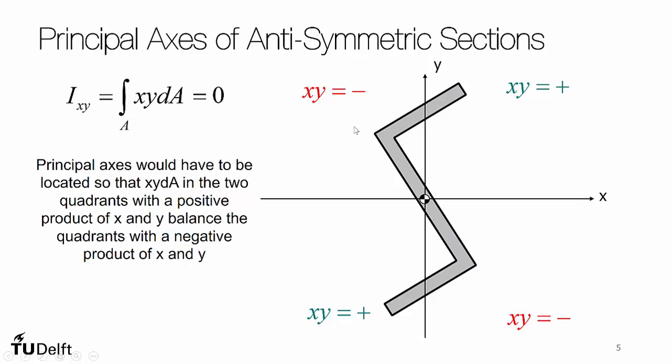Now, it's not that the areas are the same. You have to be careful. It's x times y times dA, so it's the result of all of that, and so you typically have to calculate that mathematically, but this shows that the anti-symmetry axes are not actually the principal axes.